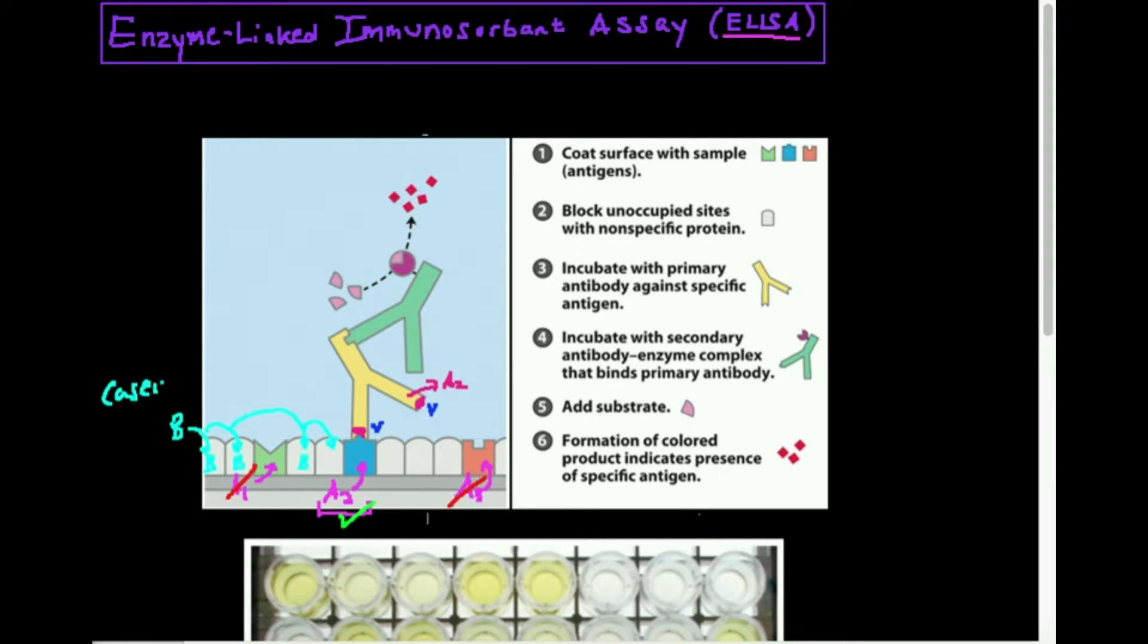Casein is a very common blocking protein. You can also use bovine serum albumin. That's also pretty common. And you don't have to worry about this antibody binding to either of these proteins because it has no specificity for them. These are absolutely specific defense proteins. In ELISA, if I wanted to measure antigen 2, I'm going to pick an antibody that only binds antigen 2. This antibody is called the primary antibody because it's the antibody that binds directly to antigen 2.